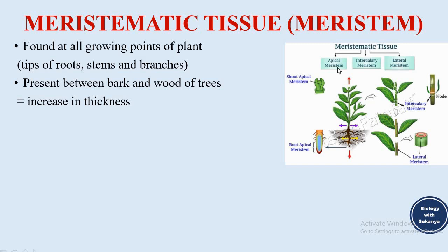The apical meristem is the meristematic tissue which is present at the root tips and at the shoot tips. When present at the root tips, they are known as root apical meristem, and when present at shoot tips, they are known as shoot apical meristem.